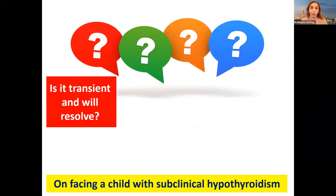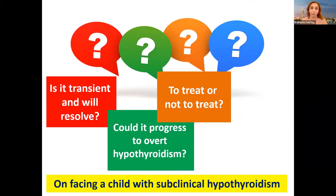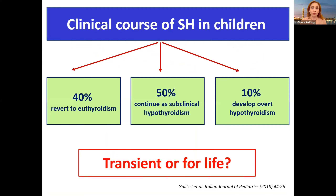Is it transient and will it resolve? Could it progress to overt hypothyroidism? To treat or not to treat — a difficult question — and even more difficult: is it a lifelong treatment, or shall we stop? Now, looking at the clinical course of subclinical hypothyroidism in children to answer this question: transient or for life?